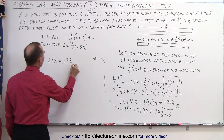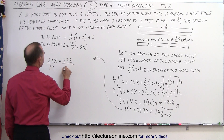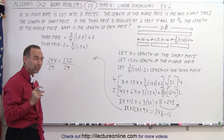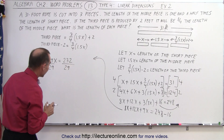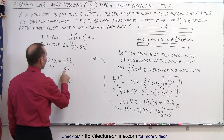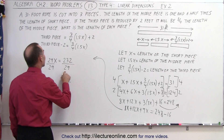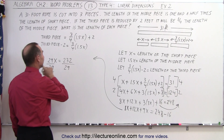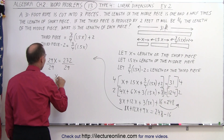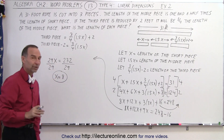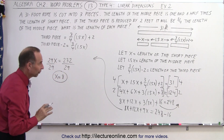Divide both sides by 29 — that's probably 8. Let's check: 8 times 29 is 8 times 20 equals 160, plus 8 times 9 equals 72, and 160 plus 72 is 232. Yes, so X equals 8. There's the solution for X.